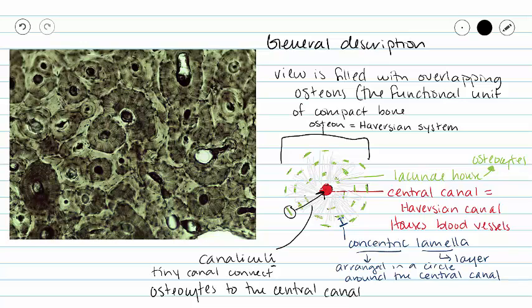Because our matrix of compact bone is going to be hard — it's a solid — diffusion doesn't happen very well through solids. So instead of trying to get our nutrients and dissolved gases through a solid, we are going to have these tiny canals to connect our osteocytes with our blood vessels located in the central canals.